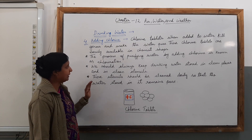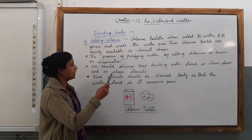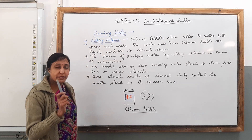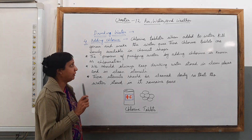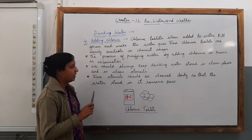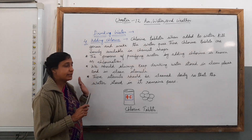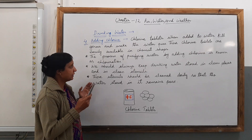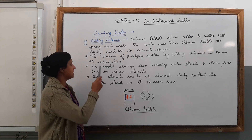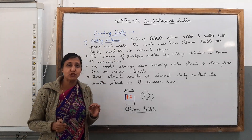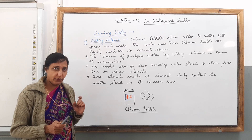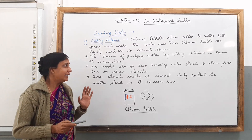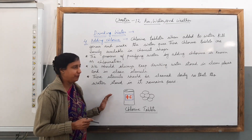Chlorine tablets, when added to water, kill germs and make the water pure. That is what is happening when you put chlorine tablets in the water — it is killing the germs and making the water pure. These chlorine tablets are easily available in a chemist's shop.